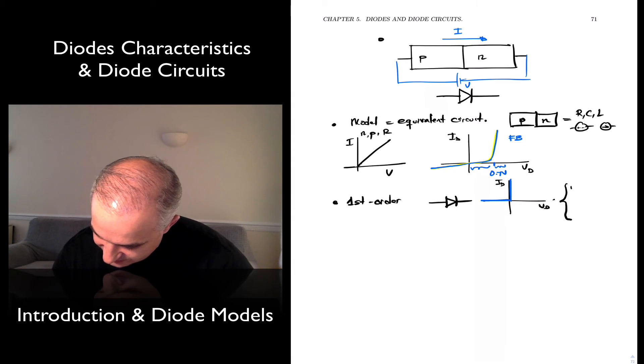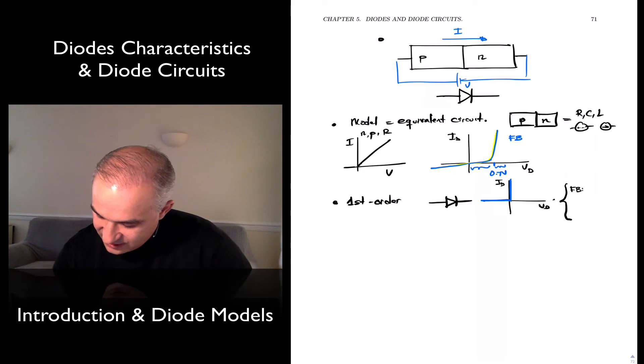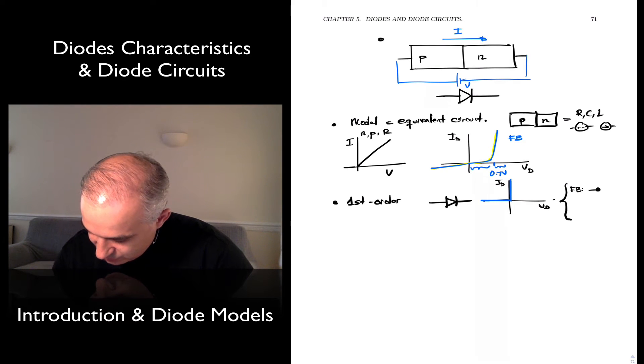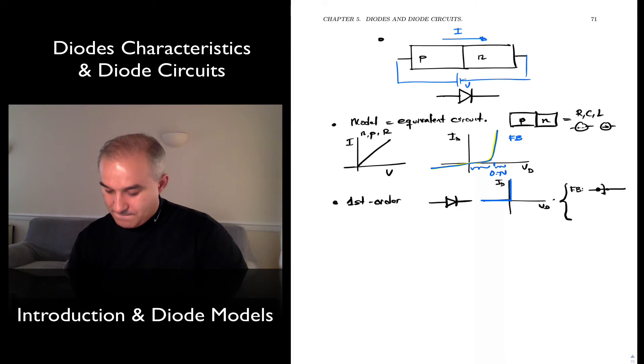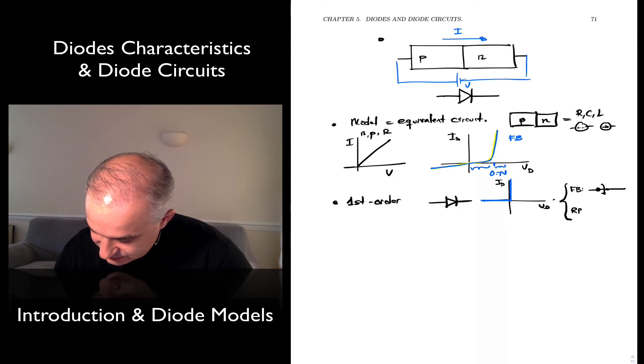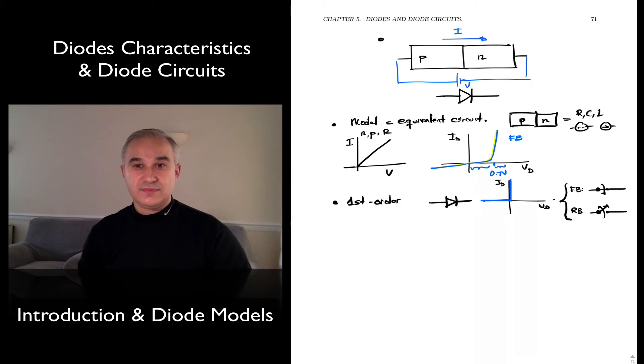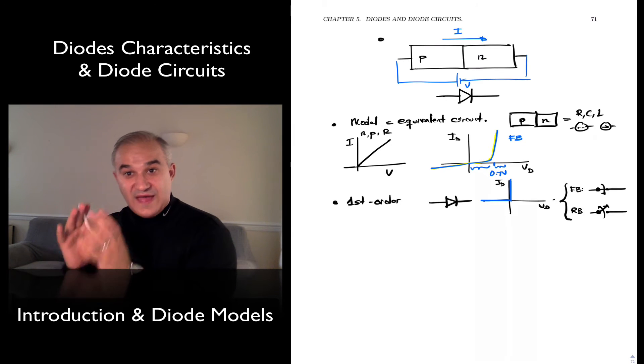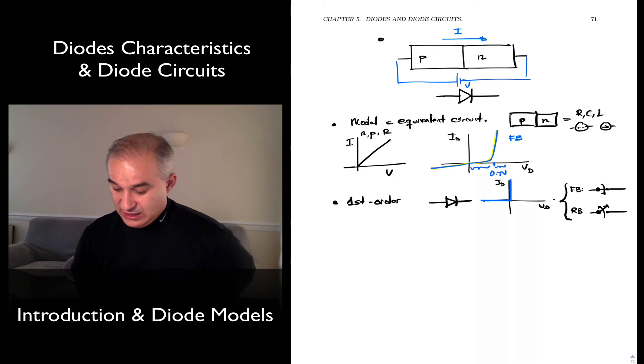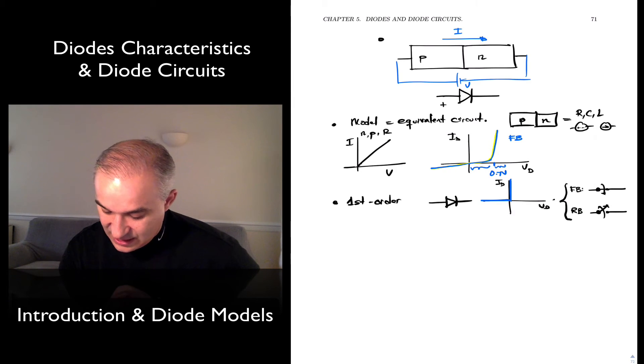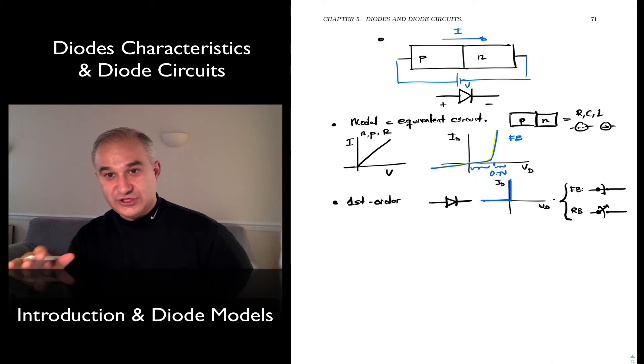So for the forward bias, our diode, we are modeling it as a switch. In this case, it's a closed switch. And in the reverse bias, this switch is open. So there's no current. So you see a diode in the circuit, you just do this. Is the polarity in the p-type, or in the anode, greater than in the n-type? And if it is, it is a short, otherwise an open. That will be a first-order model.